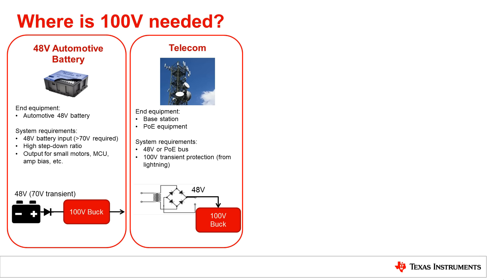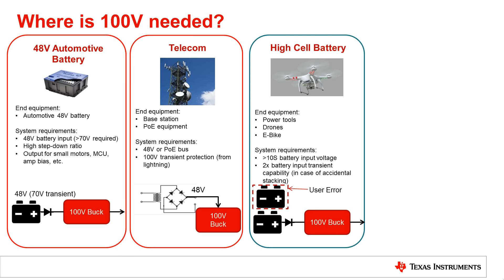In the high-cell battery space, the input can exceed 40 volts due to battery stacking. Also, two times the battery input transient is sometimes required in case the user might accidentally stack two sets of the battery.